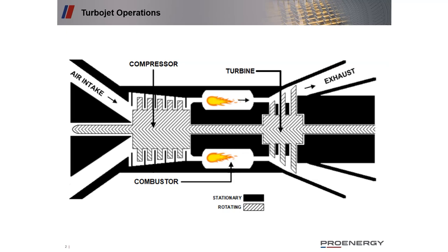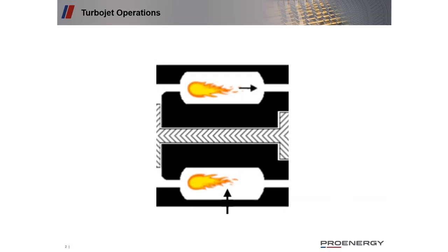In the previous episode, we discussed the LM6000 and major components. We discussed the operation of a general gas turbine, as shown here, and went through the overall operations at a high level. In this episode, we're going to go into the details associated with emissions of concern — how they're produced and ways to mitigate those emissions. We're going to talk about the combustor assembly and go over the PC versus PD, a water injection machine versus a dry low emissions or DLE type machine.